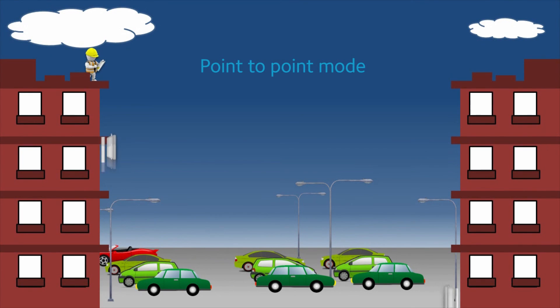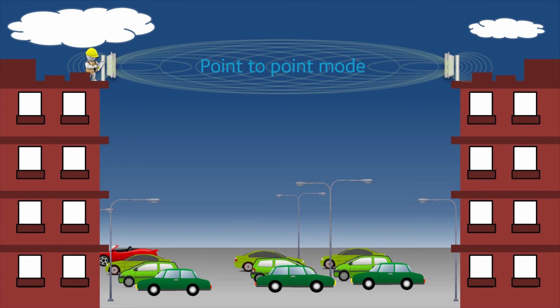Point-to-point deployment means the APs are not using external antennas and are properly aligned without any obstacles. It is ideal for joining together two locations when using wireless technology is more convenient.